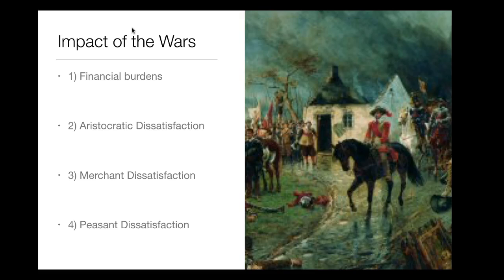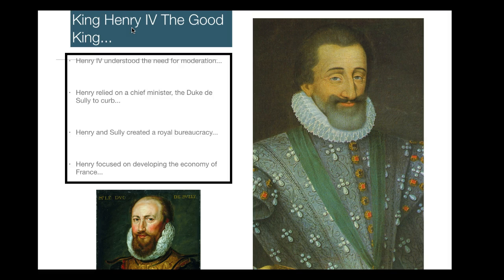Peasant dissatisfaction is also important. Peasants were the primary victims of war — the destruction of farmlands and villages caused widespread famine, and large armies marching through Europe brought disease, theft, and rape. These four areas — financial strain, aristocratic, merchant, and peasant dissatisfaction — help us understand the context within which new monarchs in France began to think about how best to organize society to achieve stability and unity.